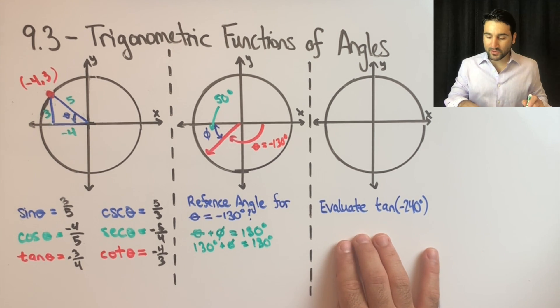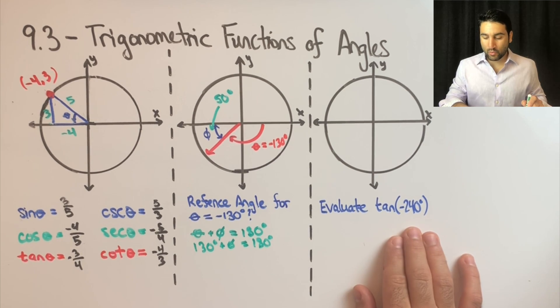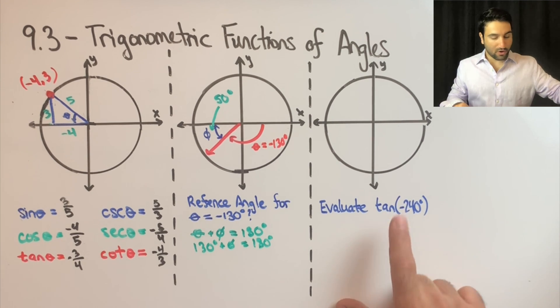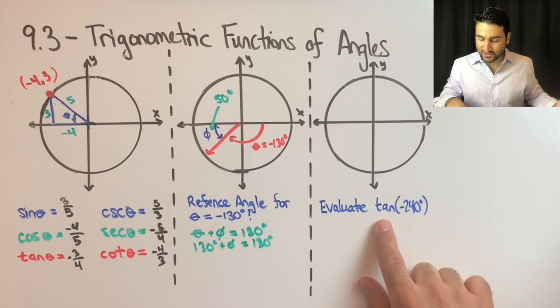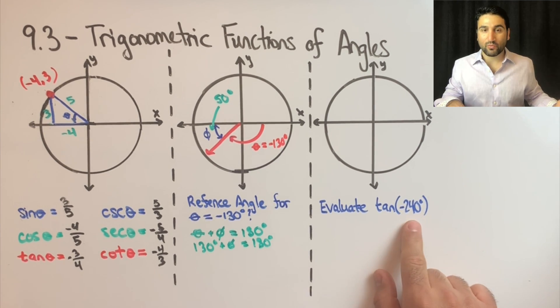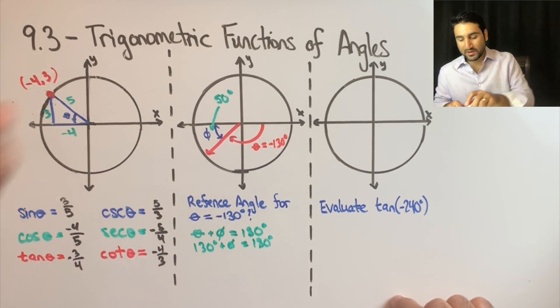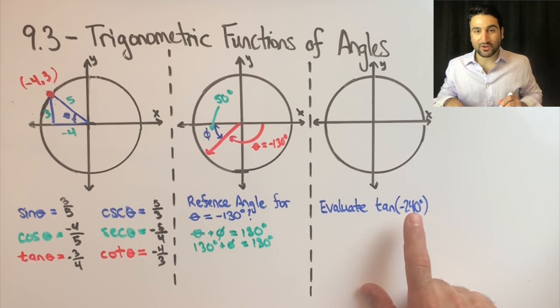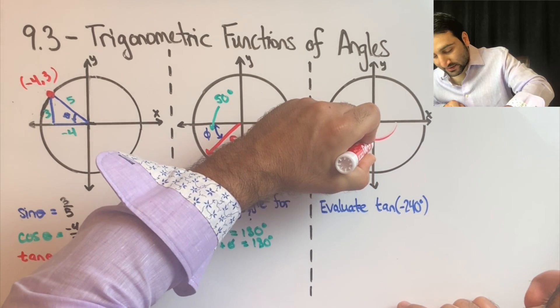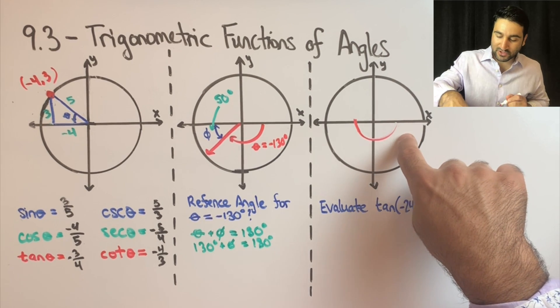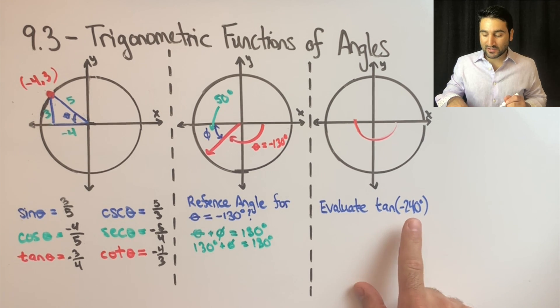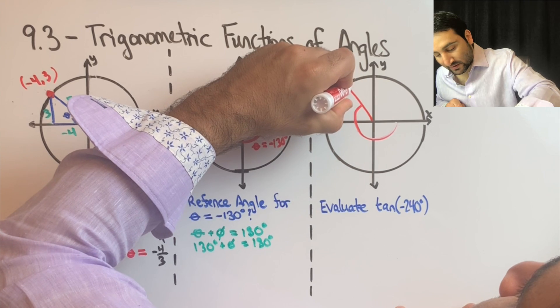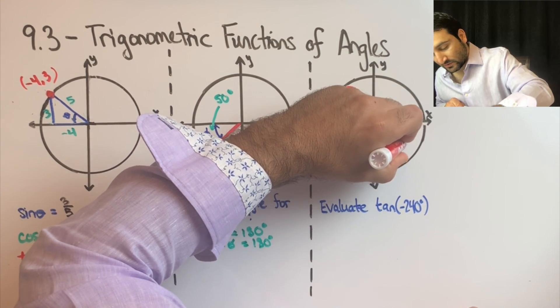Lastly, we're asked to evaluate a trig function given an angle without using a calculator. So the first thing we're going to want to do is graph this on our unit circle here. So tangent of negative 240. So let's first start with where this angle lies on this circle. So negative 240 is going to go this direction. However, we know that it's more than 180 degrees. So we know that it's going to go actually past here. If going this much is negative 180 degrees, it needs to go an additional negative 60 degrees in order to find its final location. So this is negative 240 degrees.